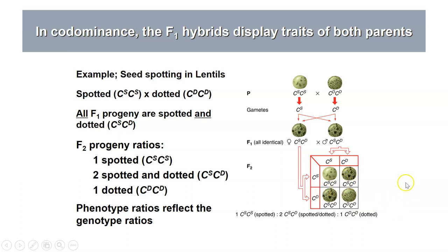If you do a cross between F1 heterozygotes, you will see a one-to-two-to-one ratio in phenotype: one quarter spotted with large splotches, one quarter dotted with small dots, and one half showing both spotted and dotted. Just as in incomplete dominance, the phenotypic ratio of one to two to one reflects the genotypic ratio of one to two to one.